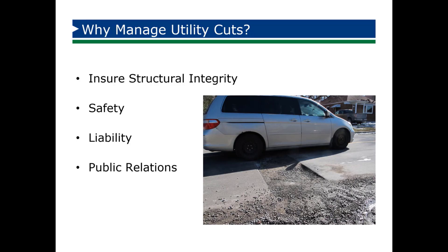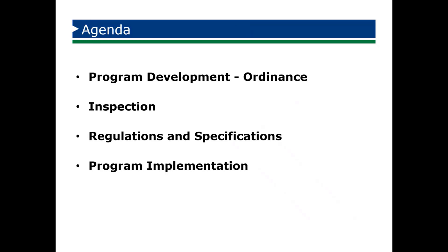The fourth one, and maybe this is pretty obvious, is the public relations aspect. We really want to make sure that we're doing the right thing by our public and we're putting a program in place that does not permit these types of issues to linger. So there are four things we're going to talk about here today. One is the program development — I'm going to spend a lot of time really talking about the ordinance, because that's really where the program originates.